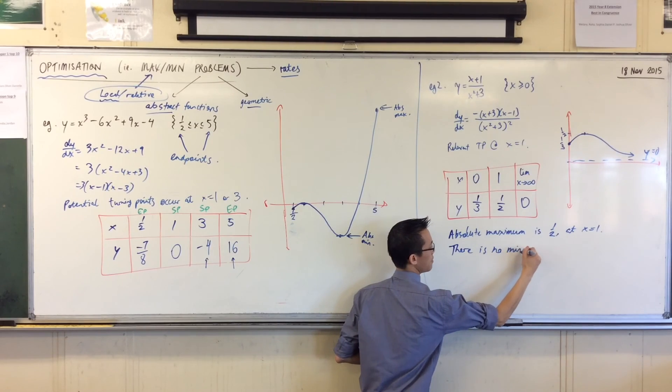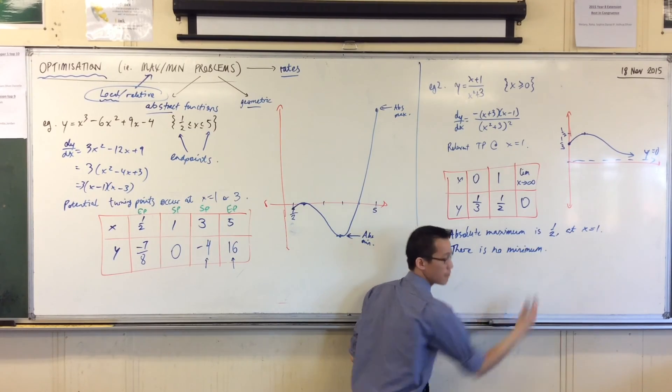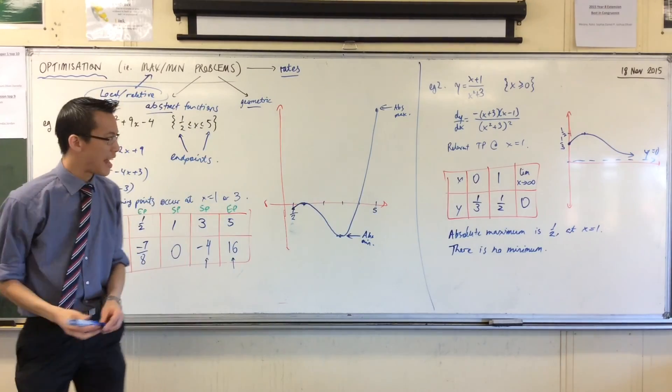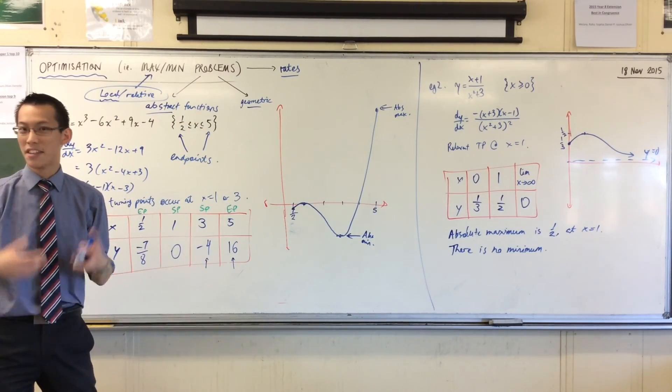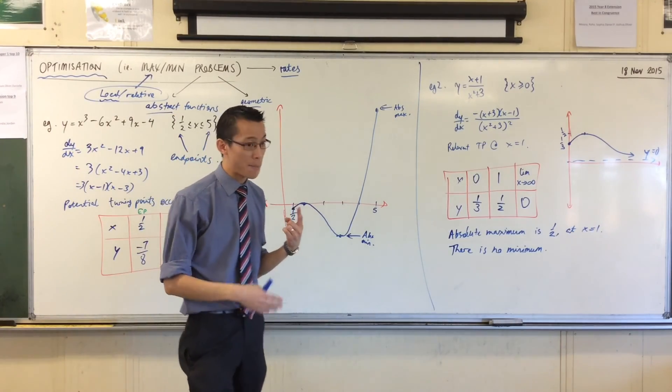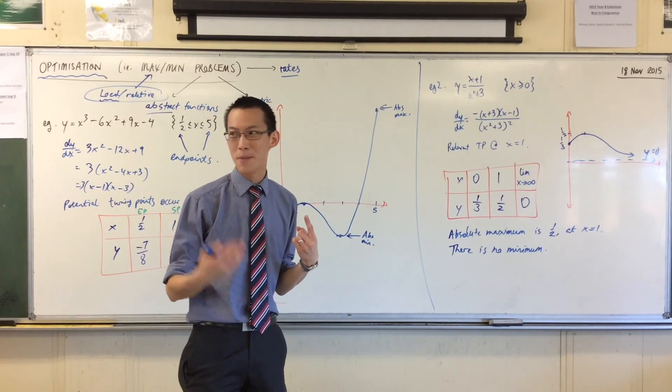There is no minimum, because by definition, the minimum is a number. But there is no number that actually satisfies the description of the minimum. Can't be 0, because you can't get there. It can't be any number above 0, because you'll always be able to get lower than it.